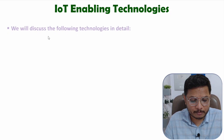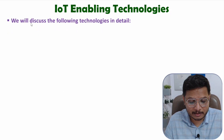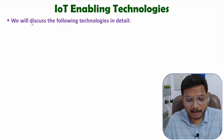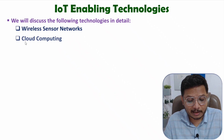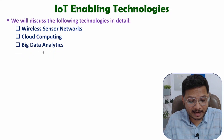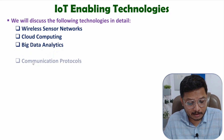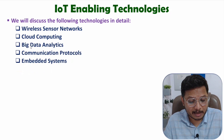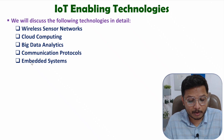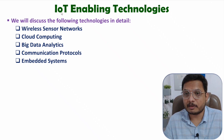When it comes to IoT system, there are varieties of technologies like Wireless Sensor Network, Cloud Computing, Big Data Analytics, Communication Protocols, and Embedded System. So by these technologies, we are working with IoT system.